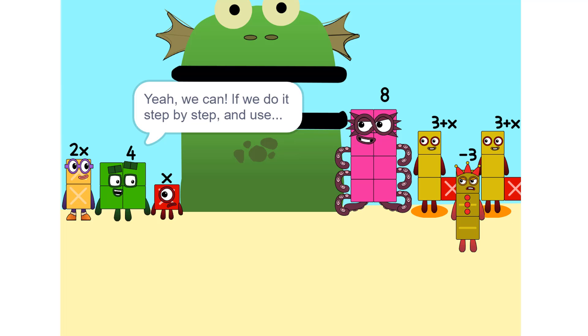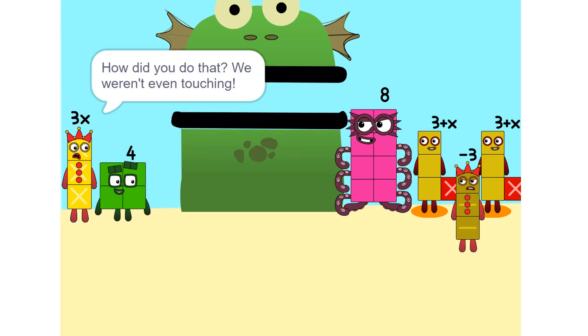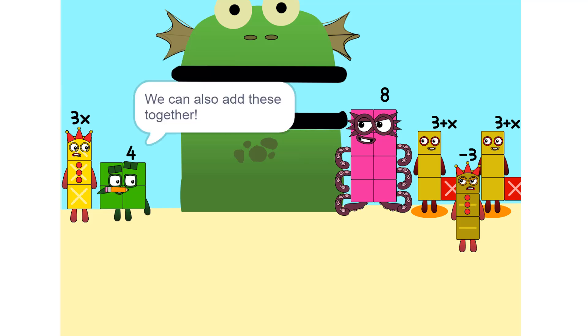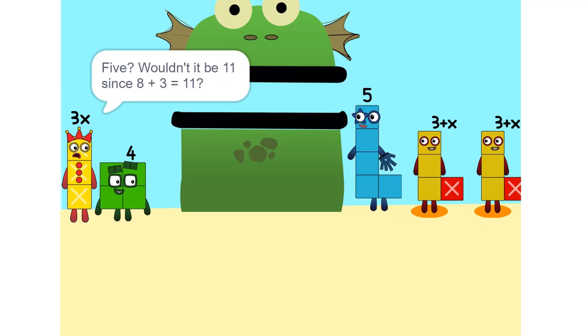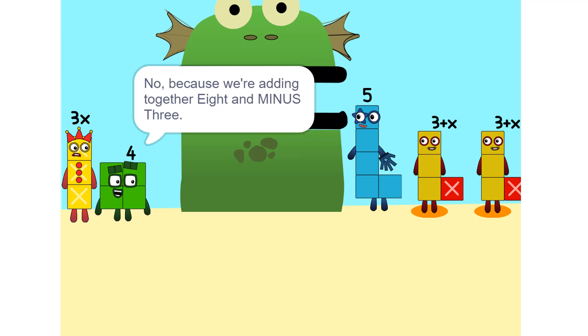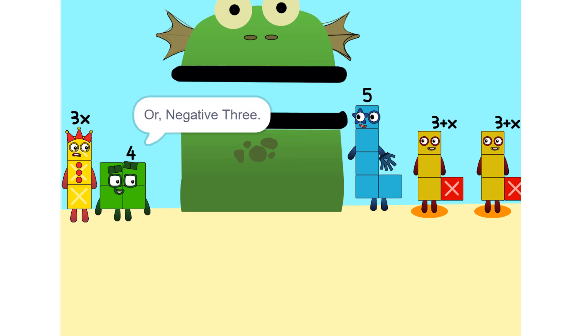Yeah, we can. If we do it step by step and use a pencil. So let's get started. One thing we can do is add these two together. How did you do that? We weren't even touching. They don't have to be. Could we do it if we were touching? Yeah. We can also add these together. Five. Wouldn't it be 11 since 8 plus 3 is 11? No. Because we're adding together 8 and minus 3, or negative 3. So it's five.